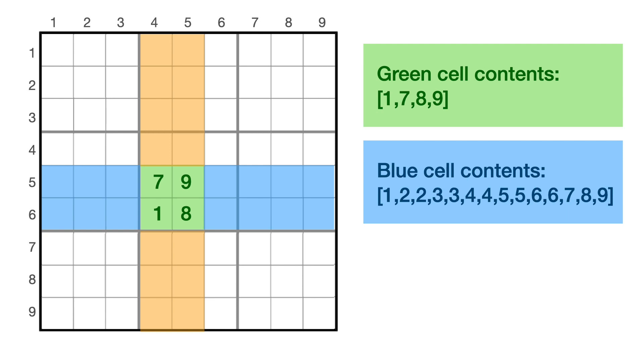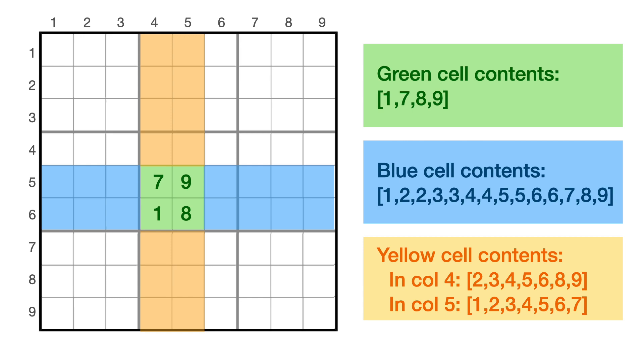Which digits are contained in the yellow region? Well, the yellow cells in column four must contain all the digits one through nine, except one and seven. And the yellow cells in column five must contain all the digits one through nine, except eight and nine. So the 14 yellow digits must be in some order one, two, two, three, three, four, four, five, five, six, six, seven, eight, nine. So lookie there, it's the same list of digits.